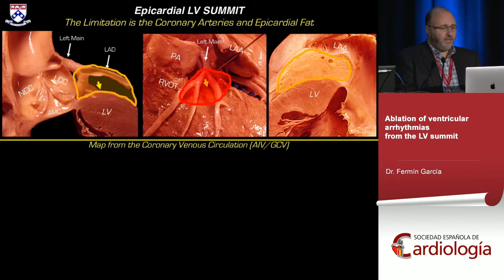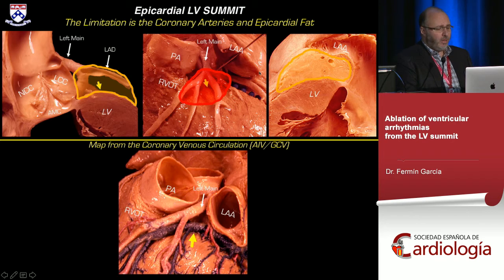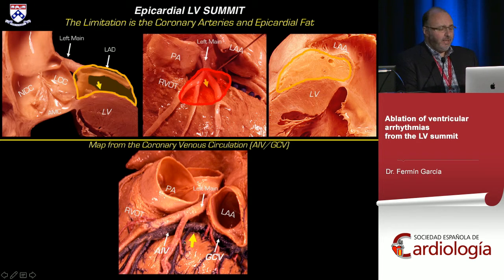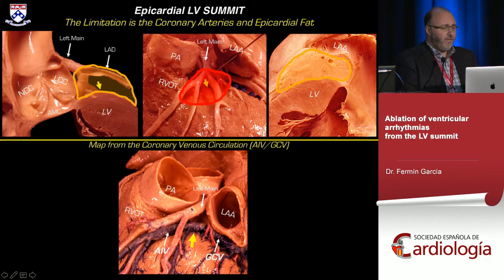The arrhythmias don't come from the great cardiac vein or the AIV — we map the LV summit from them because of their anatomical relationship. You can theoretically place a mapping or ablation catheter in the AIV, the great cardiac vein, or somewhere in between, and indirectly find what gets you closer to this point — because now you're below the coronary circulation and below the fat.